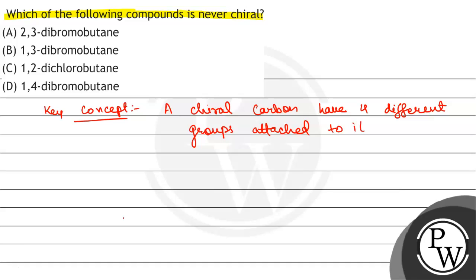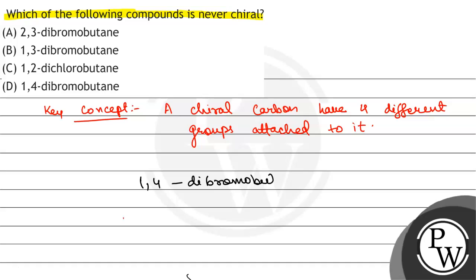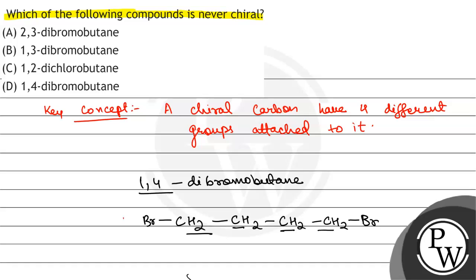अब हम देखेंगे जो fourth option है, that is 1,4-dibromobutane. इसका अगर हम structure बनाएंगे, तो 1,4-dibromobutane मतलब यह CH2-Br, CH2, CH2, CH2-Br। इसमें carbon से हमेशा दो-दो hydrogen attached रहेंगे, यह कभी भी chiral नहीं हो सकता। So the correct option will be option D.